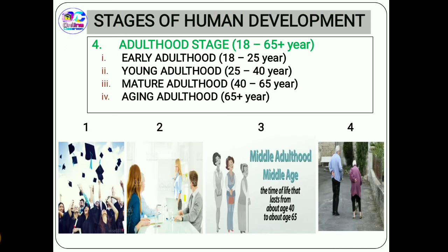The last stage is the adulthood stage, which is long-term and has been classified into four categories: early, young, mature, and aging adulthood. Early adulthood is confined from 18 to 25 years — it is a developmental bridge between pre-adulthood and young adulthood. This phase is considered the healthiest time of life. Between ages 18 to 25, the individual becomes more independent and explores various life possibilities.